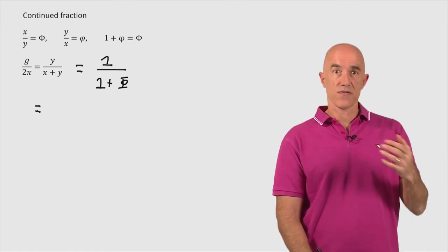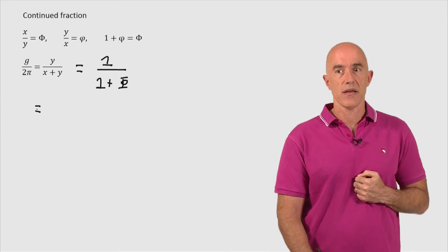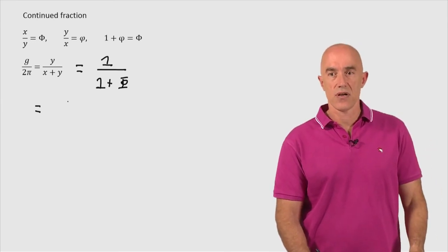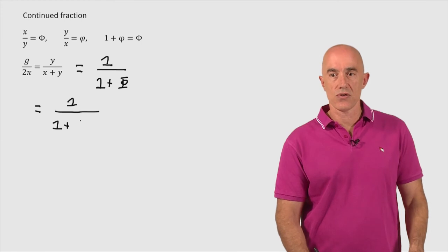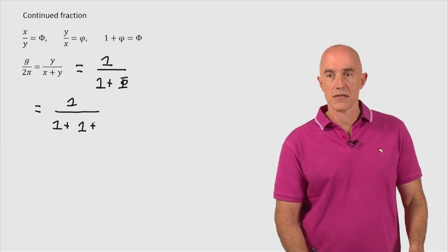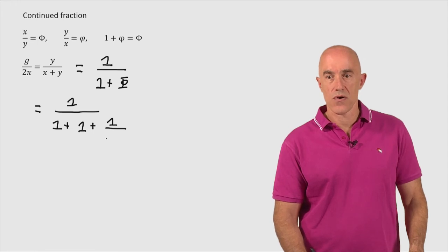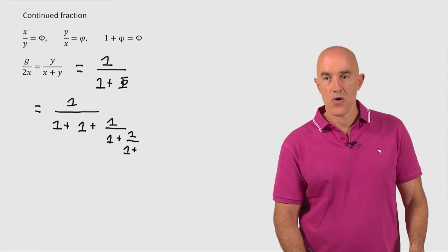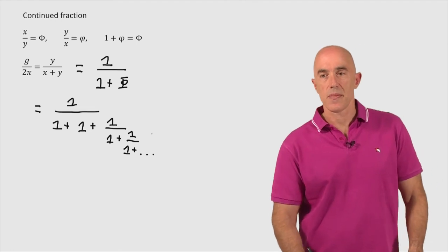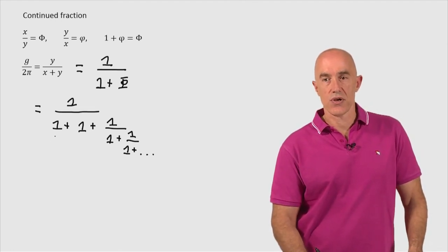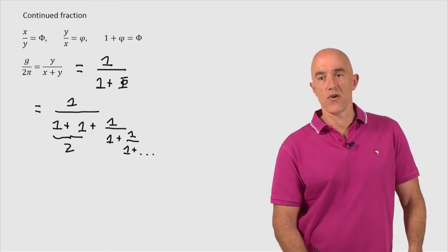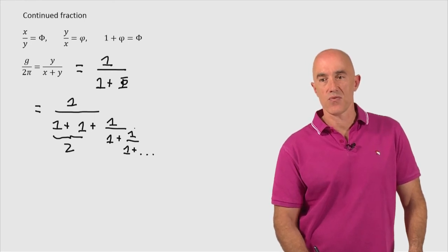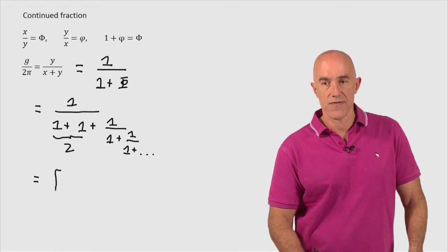And if we want to know what is the continued fraction for g over 2π, then we can just use the continued fraction for the golden ratio. So this is 1 over 1 plus the continued fraction for the golden ratio is 1 plus 1 over 1 plus 1 over 1 plus all the way, all 1s here. So what is this? These two terms combine to get 2. So it's 1 over 2 plus 1 over 1 plus 1 over 1. So we can write that in our shorthand form.